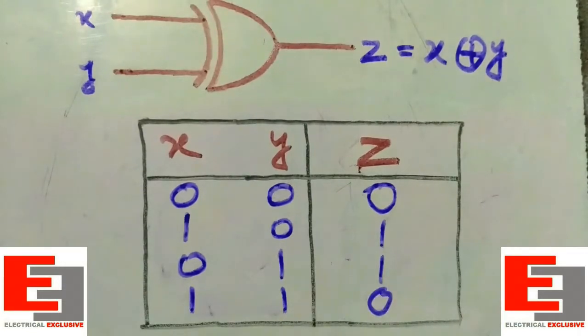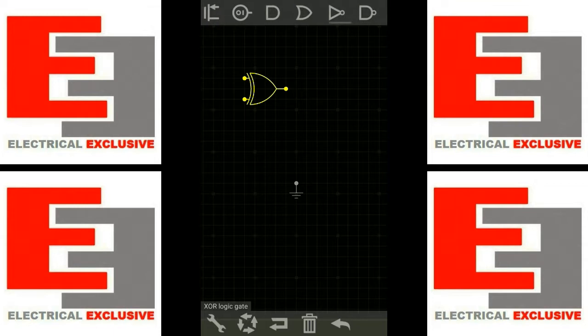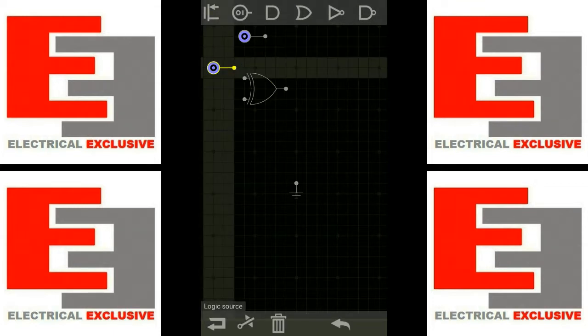So this is all about the XOR gate. Now let's go to the simulator to see the working model of the XOR gate. This is the XOR gate. I need two logic sources to supply the XOR gate.